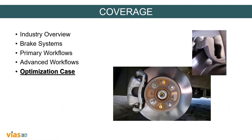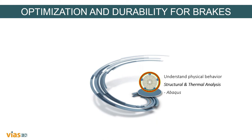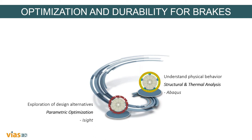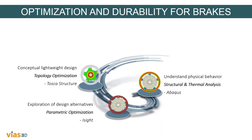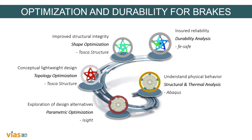Let's take a look at an optimization case of a brake system using different Simulia tools. The workflow for the optimization and durability study of a disc brake involves: first, understanding the behavior of the geometry and materials due to different structural and thermal loads using Abaqus — the finite element analysis tool; second, exploring different design alternatives by performing a parametric optimization in iSight; third, a topology optimization in Tosca with the goal of obtaining a lighter design; fourth, a shape optimization in Tosca to improve structural integrity; and finally, a durability analysis in Fe-Safe to obtain the fatigue life of the component.